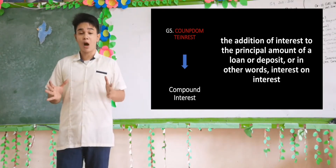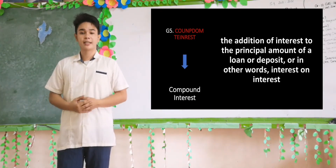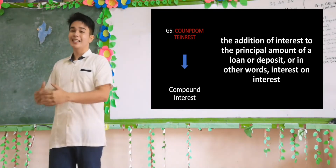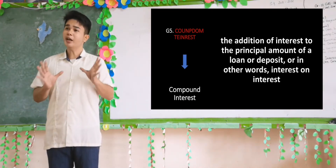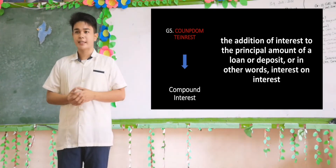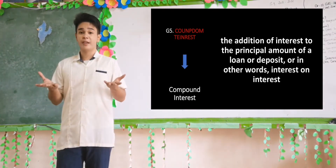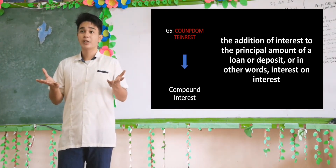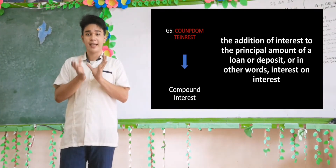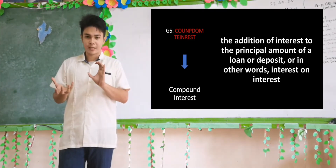Compound interest refers to the addition of interest to the principal amount of a loan or deposit — in other words, interest on interest. When it comes to compound interest, going back with 100 and 150, and so to 50, compound interest rapidly increases.